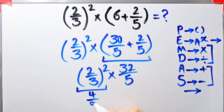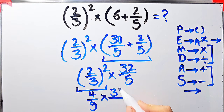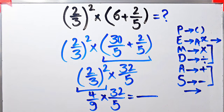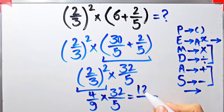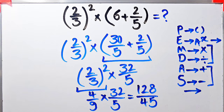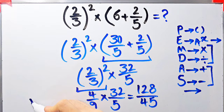Two over three to the power of two equals four over nine. Now the question is four over nine times thirty-two over five. Four times thirty-two equals one hundred twenty-eight, and nine times five equals forty-five. The final answer of this question equals one hundred twenty-eight over forty-five.